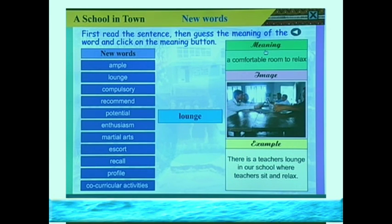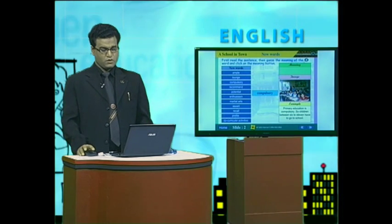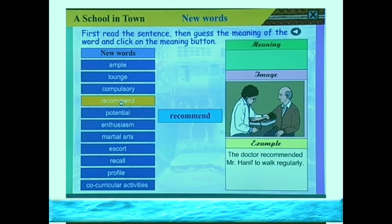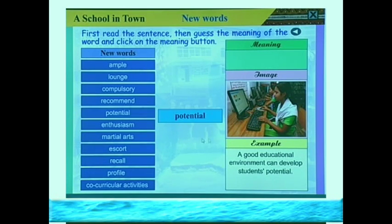The third word is 'compulsory.' Example: Primary education is compulsory — children between 6 to 11 have to go to school. Compulsory means something that must be done; you have to do it. The next word is 'recommended.' Example: The doctor recommended Mr. Hanif to work regularly. To recommend means to advise someone about something. Now 'potential.' Example: A good educational environment can develop student potential. Potential means somebody's natural ability to be good at something.